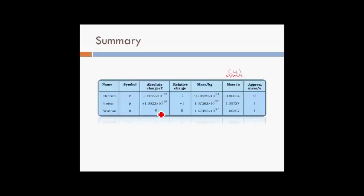The neutron's mass is approximately the same as that of the proton, though the neutron is slightly heavier. In unified mass units, the neutron and proton have approximately the same mass. The columns to remember in this summary table are the symbol, absolute charge, relative charge, and mass in kilograms.